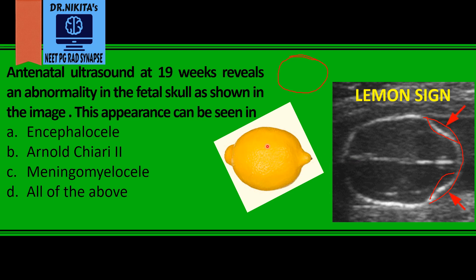The lemon sign is seen in conditions where there is decreased intracranial pressure, like encephalocele, or it can be seen in conditions of the spine such as meningomyelocele or spina bifida. Because of the decreased pressure, the brain tries to herniate to the posterior fossa, which causes the frontal bones to become concave, giving the lemon sign.